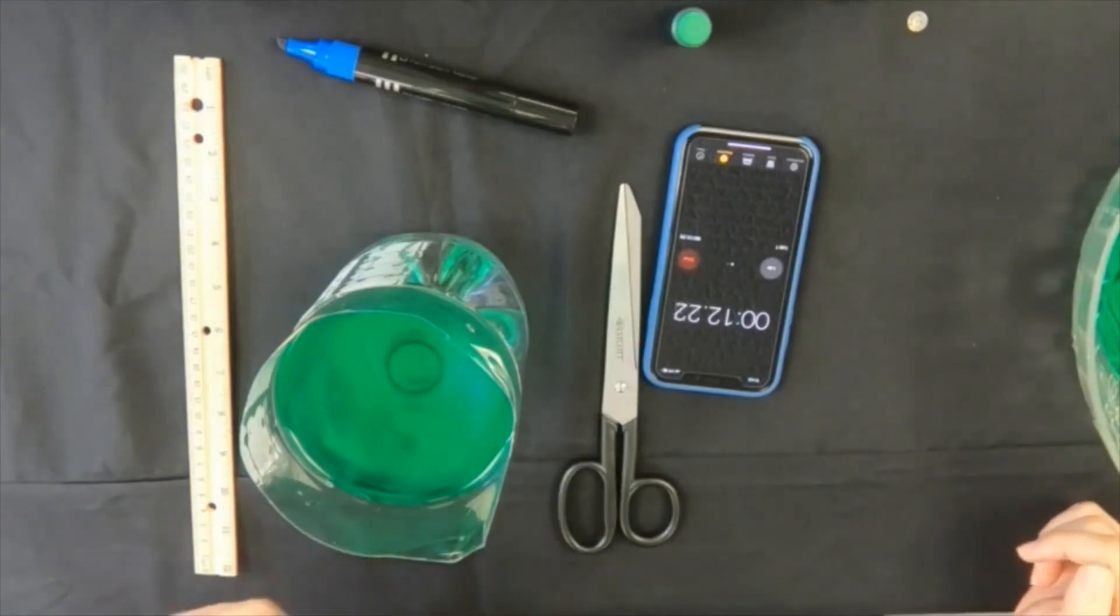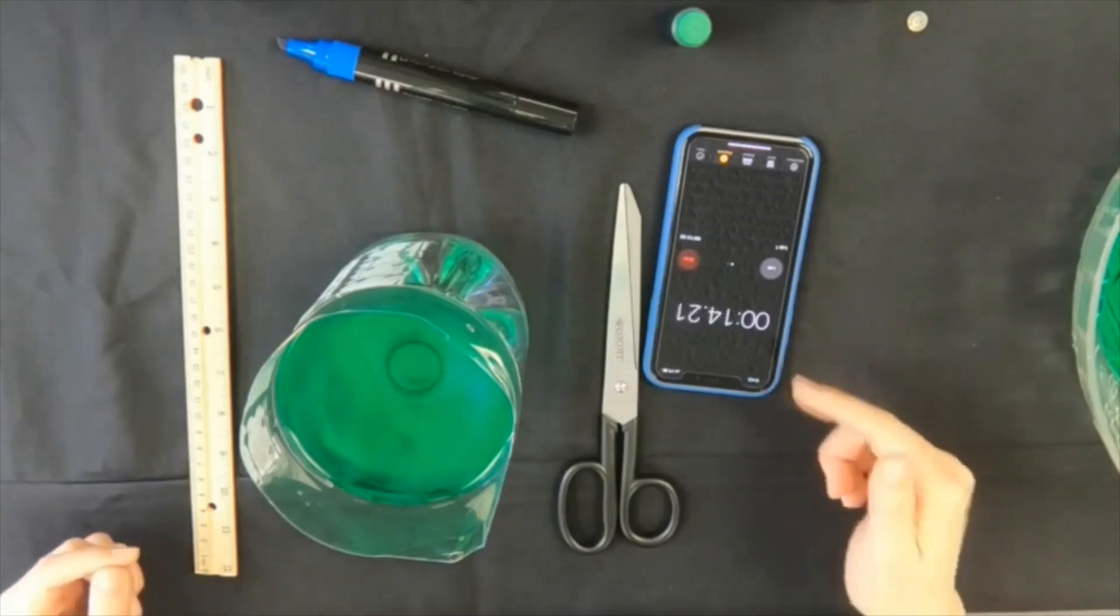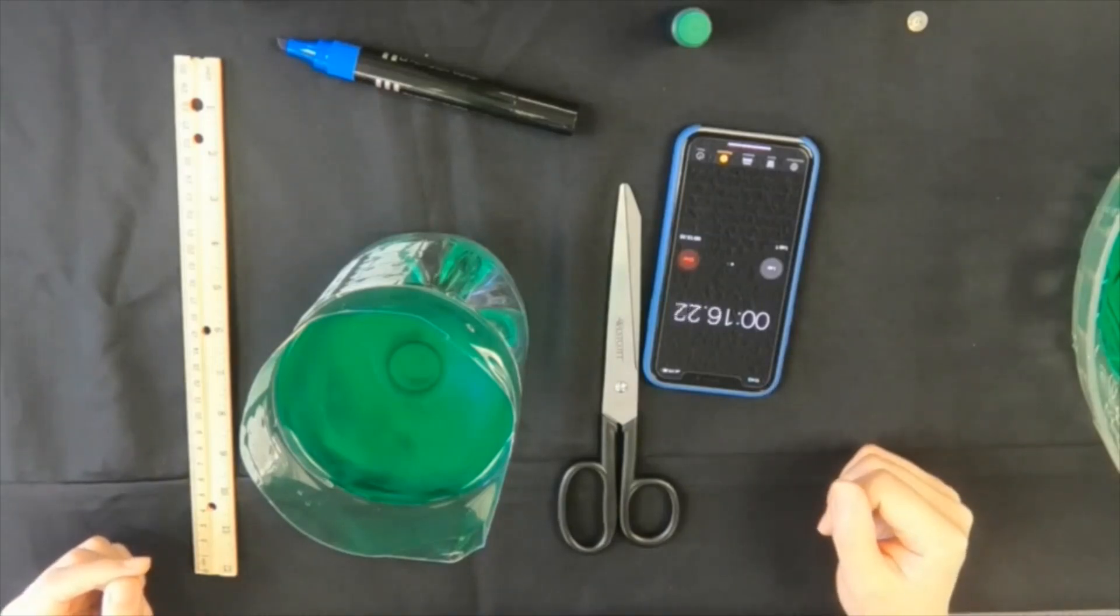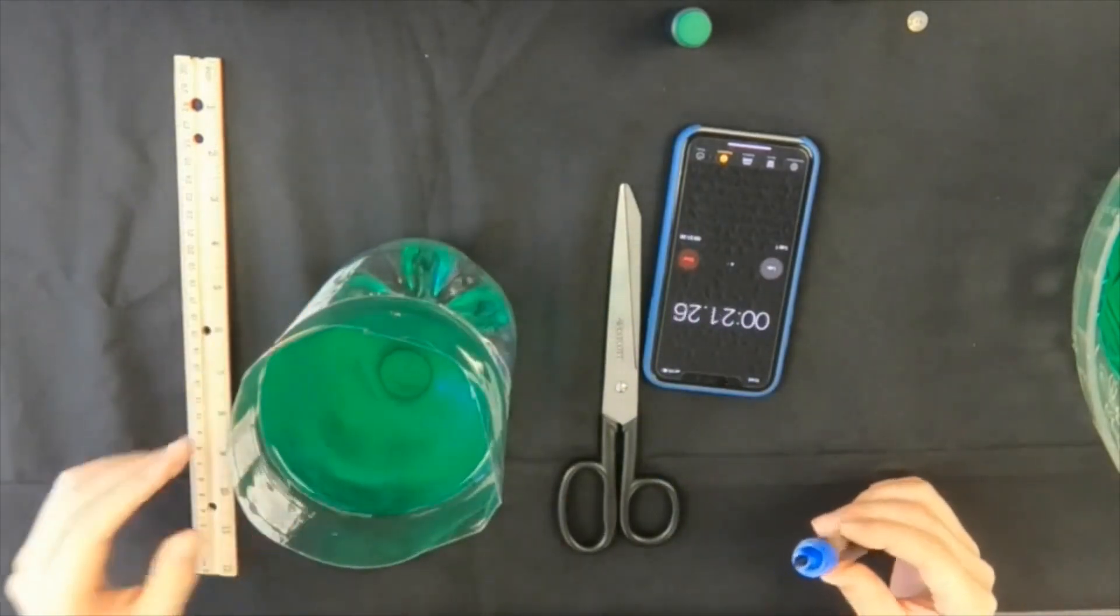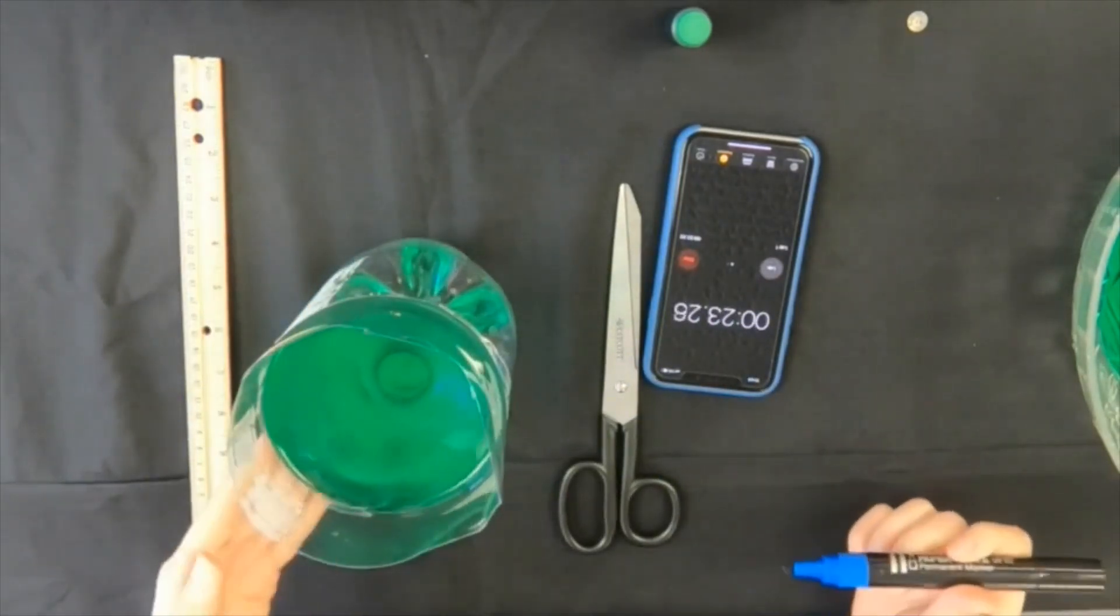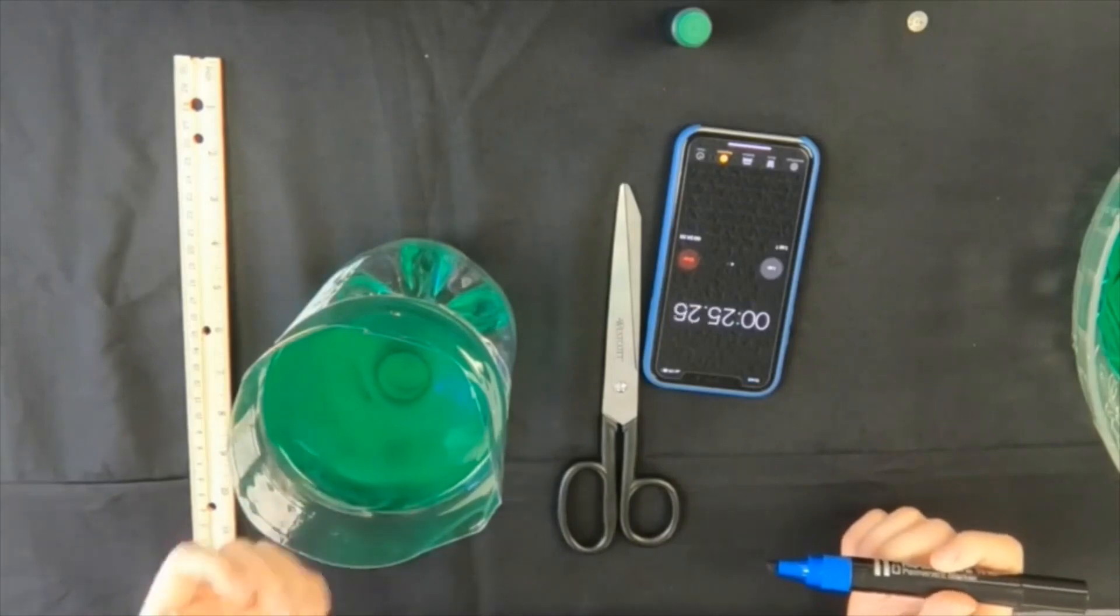Each time your preferred unit of time passes, a minute is standard, use the marker to mark a spot on the outside of the bottle until the water is either full or runs out.